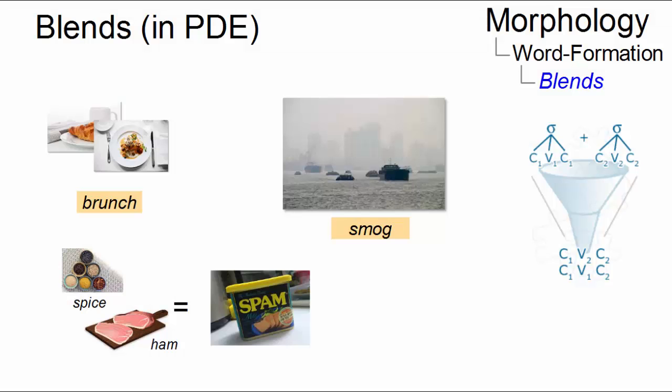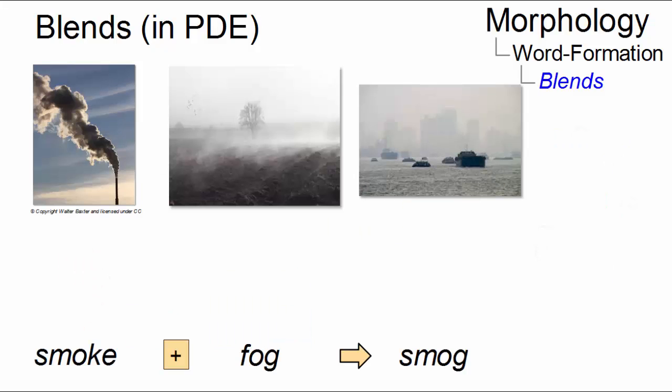Blends are words formed in an unorthodox way by joining chunks of their component parts. Here is a well-known example: the combination of smoke and fog results in smog.